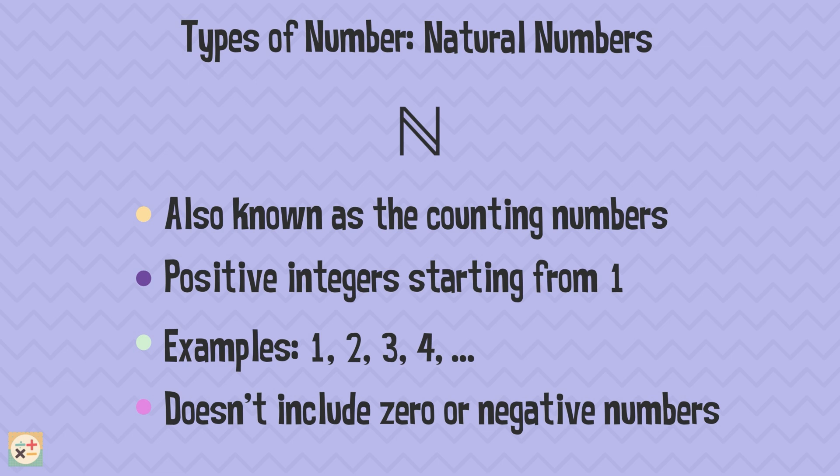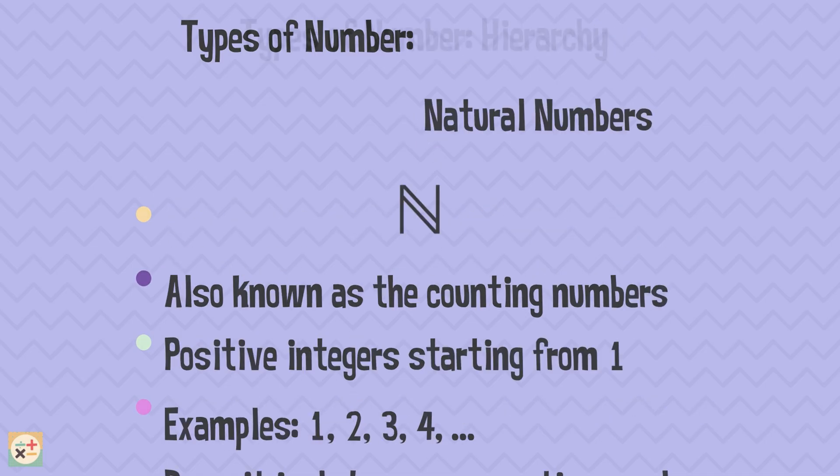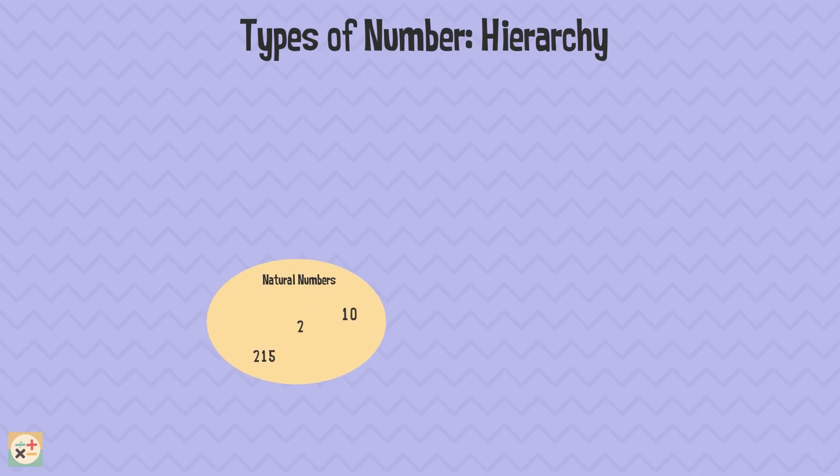Let's start to build a diagram to visually represent where the different types of numbers fit in. We'll start by placing the natural numbers here. Natural numbers are positive and start from one. But what if we wanted to include zero in our list?